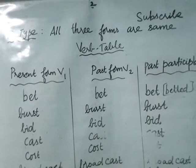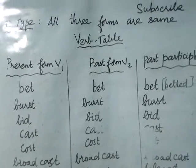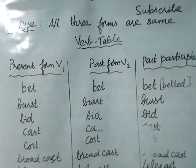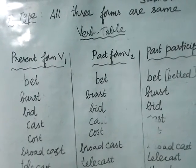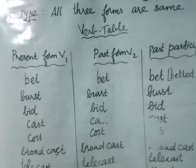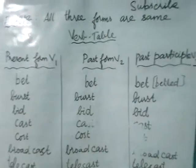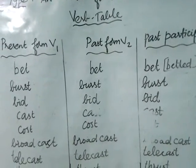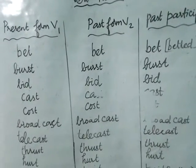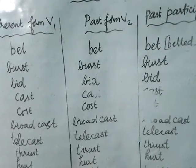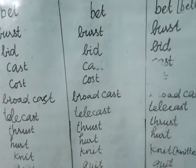We are first learning the first type — all three forms are the same. Before going to the verb table, please subscribe to the channel. In this verb table, the present form, past form, and past participle form are all the same — there is no difference. For example: bet, bet, bet; burst, burst, burst; bid, bid, bid.